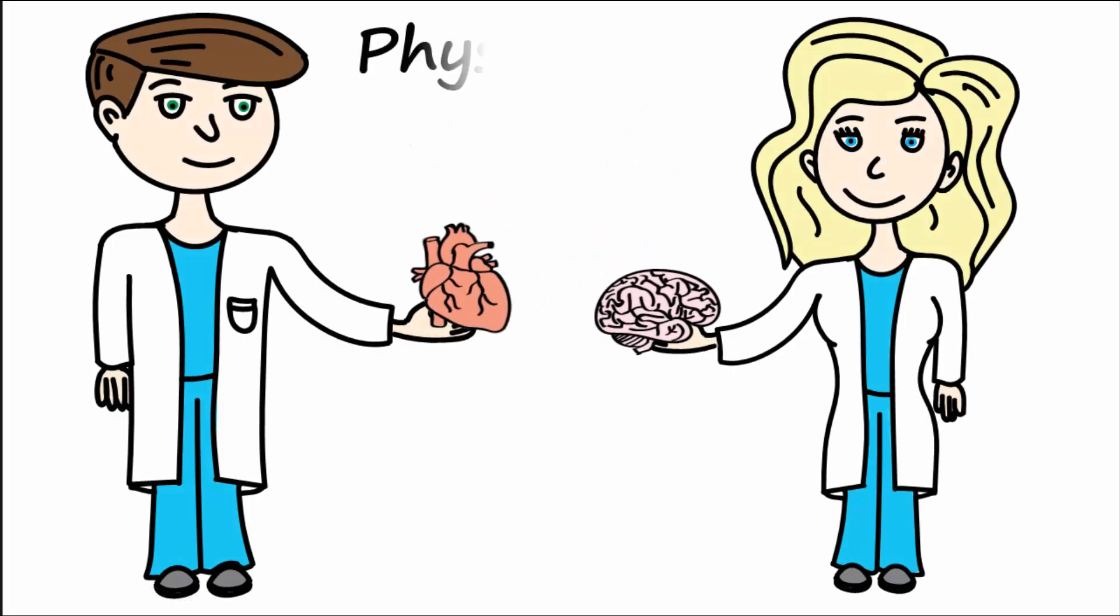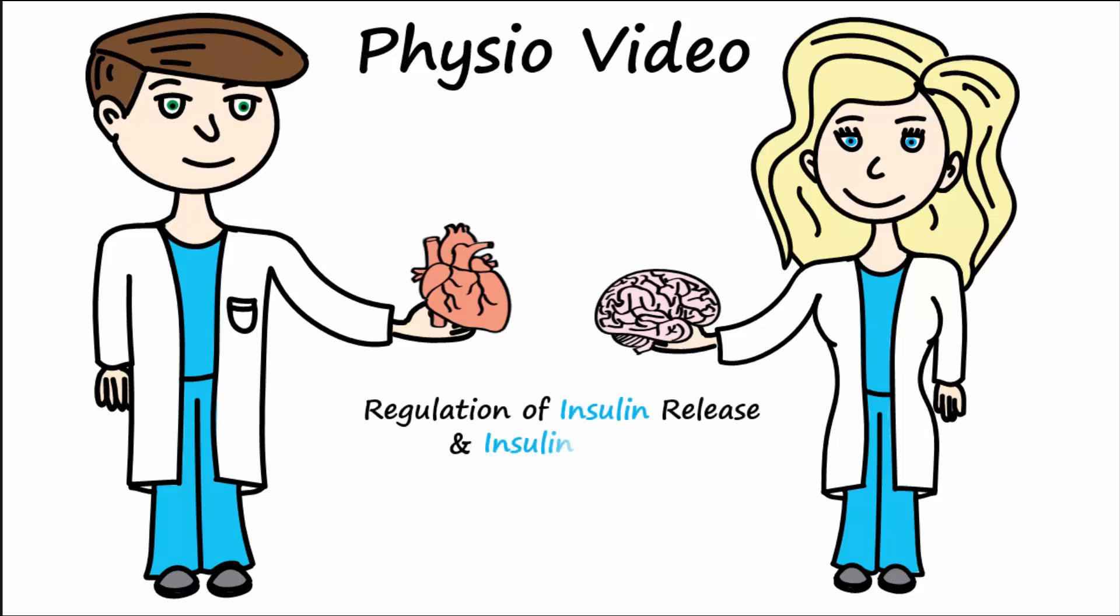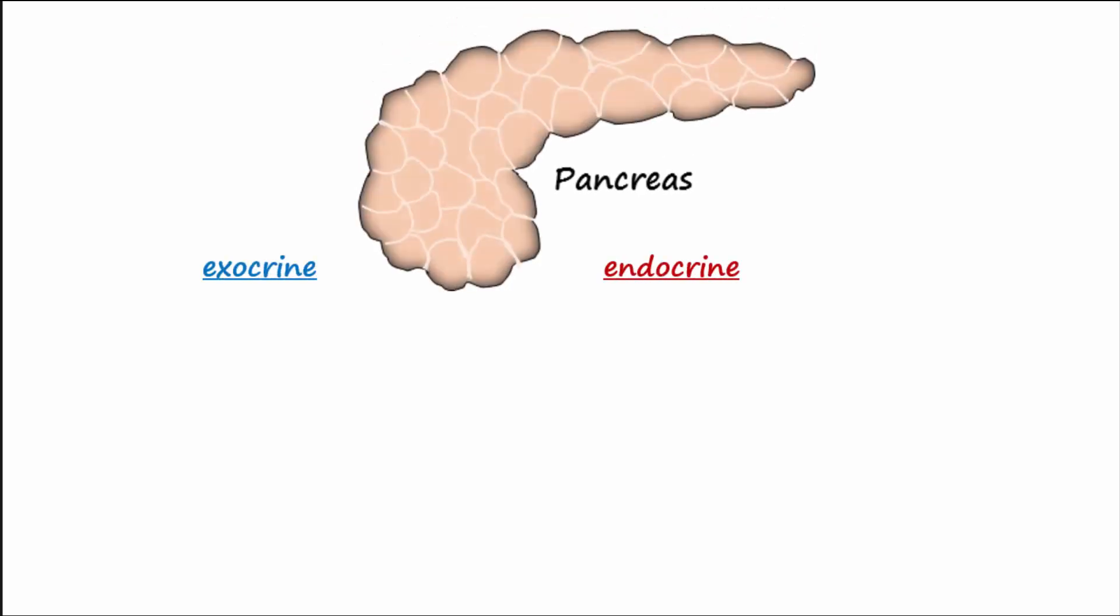Welcome to another physio video. Today let's talk about the regulation of insulin release and insulin action. The pancreas is both an exocrine and endocrine gland. Exocrine because it makes enzymes for the digestion of fats, carbohydrates, and proteins that it secretes into the lumen of the duodenum.